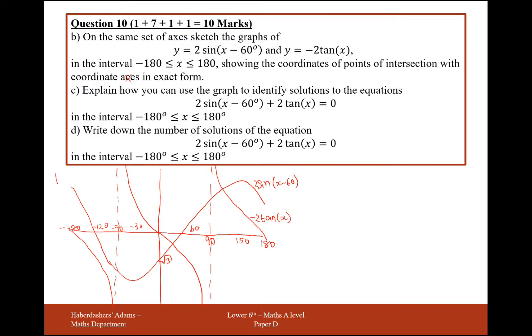Okay, part C, this is part B here. Part C is explain how you can use the graph to identify solutions to this equation here. Well, what we do here is we set the equations equal to each other: 2sin(x - 60°) = -2tan(x). And add 2tan(x) onto the other side of the equation. We're going to get 2sin(x - 60°) + 2tan(x) = 0.